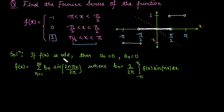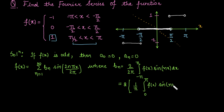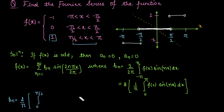Since the function is odd, we can also write bₙ as twice of (1/π) times the integral from 0 to π of f(x) sin(nx) dx. Breaking the integration from 0 to π into 0 to π/2 and π/2 to π, we get bₙ = 2 times (1/π) with the two sub-intervals.